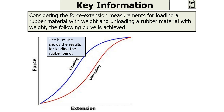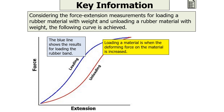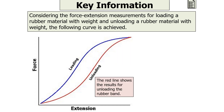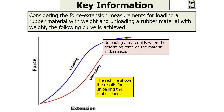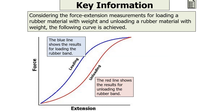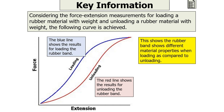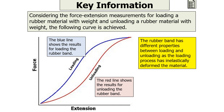When considering force extension measurements for loading and unloading a rubber material, two curves are achieved. The blue line shows the results for loading the rubber band — loading is when a deformant force is placed on the material and increased, so the blue line is called a loading curve. The red line shows the results for unloading — when the deformant force is decreased — so it's called an unloading curve. The rubber band shows different material properties when loading compared to unloading, as the loading process has inelastically or plastically deformed the material.